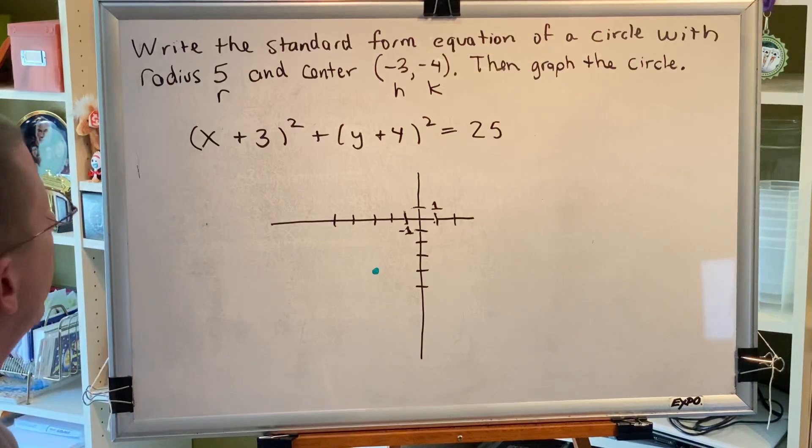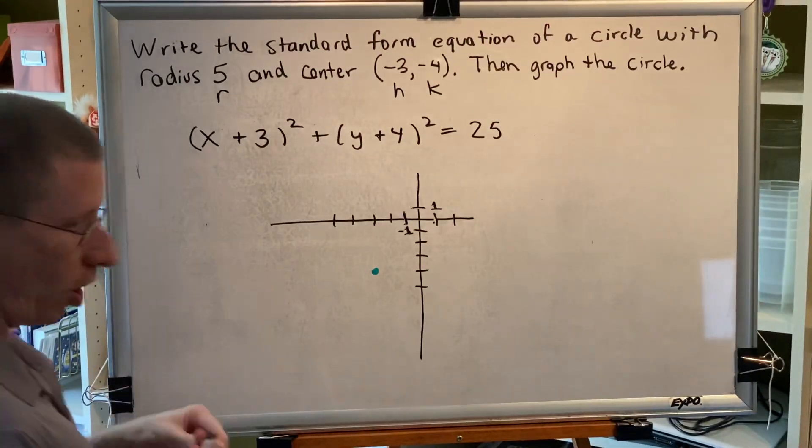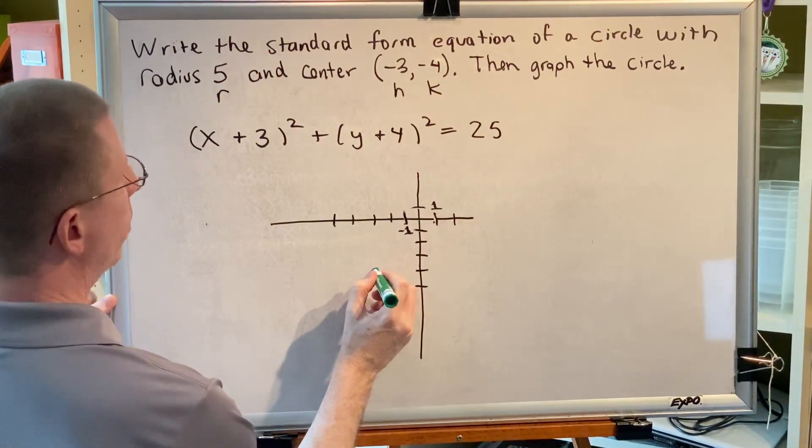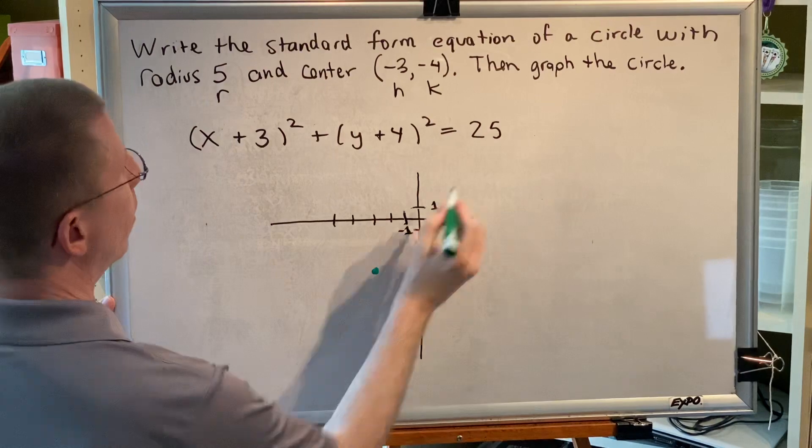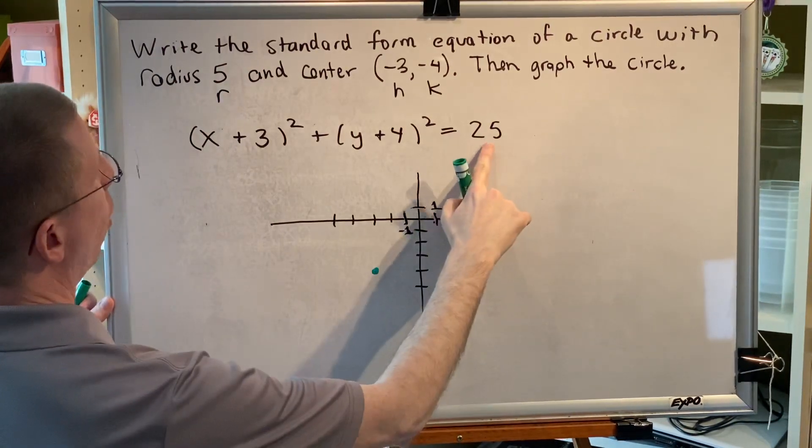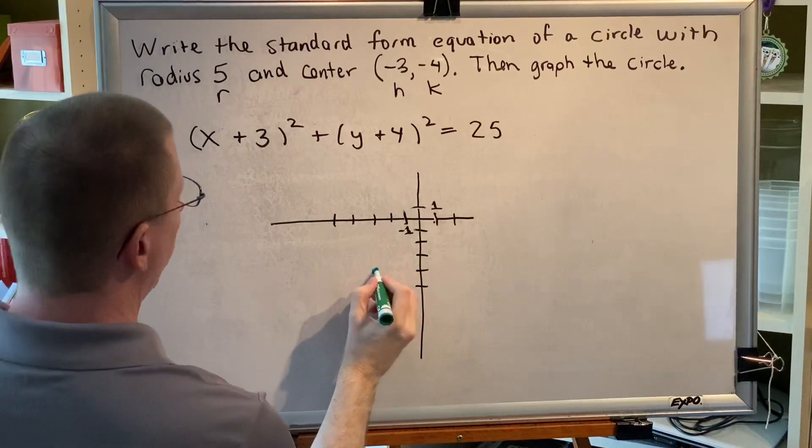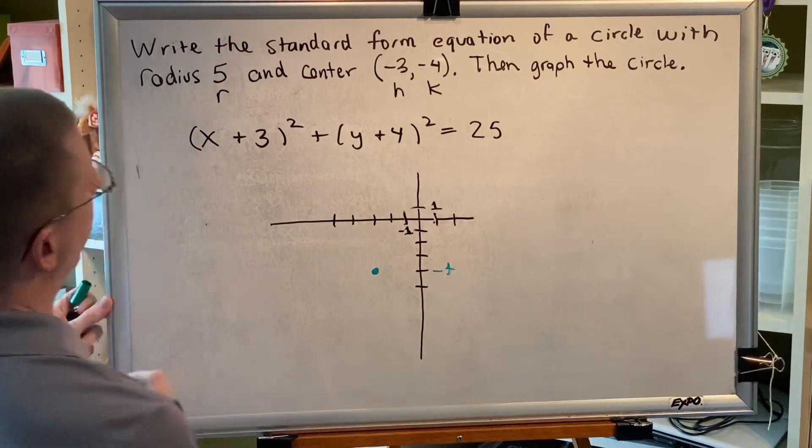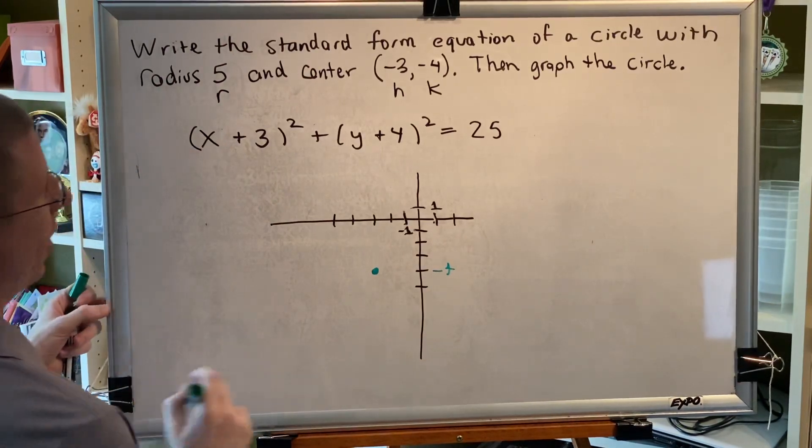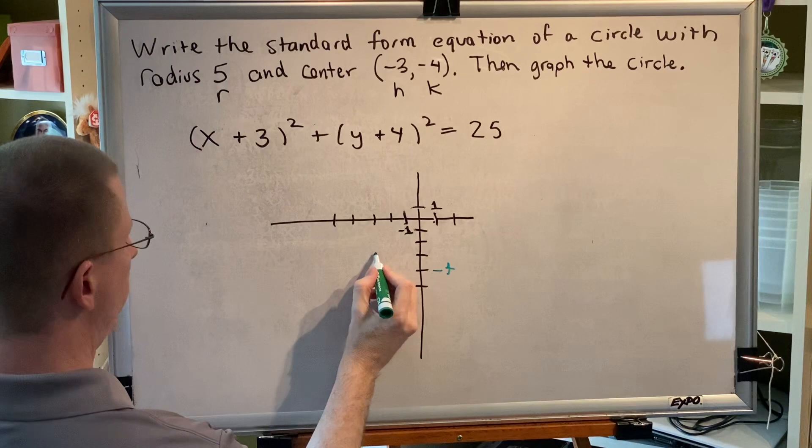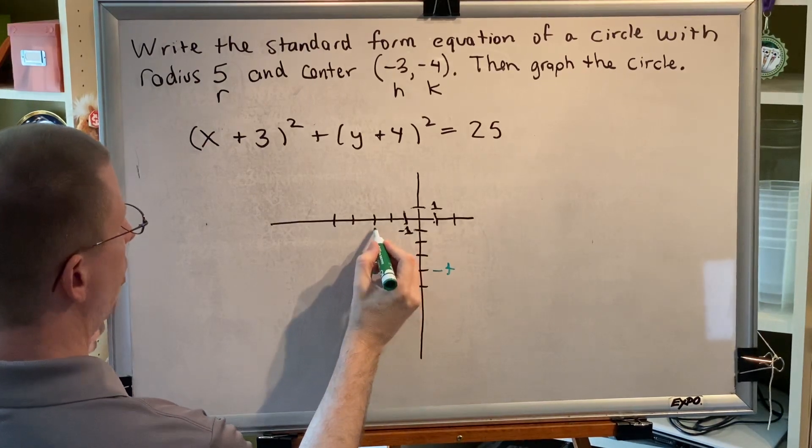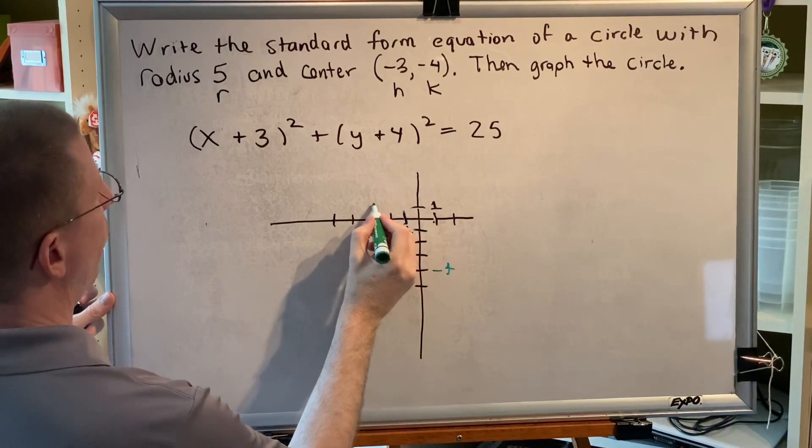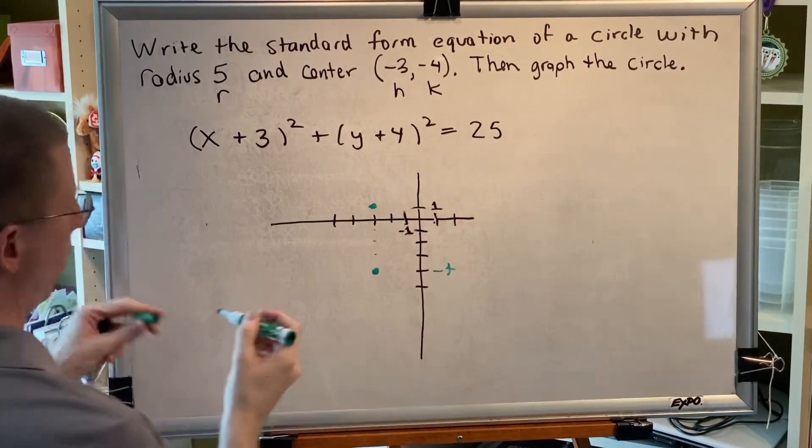The radius is five, which means that I need to start at my center and I need to go up, down, left, and right five steps. Remember, this is r squared. r is five. So let's go up first. Right now, I'm at a height of negative four. When I go up five, I should end up at one, but let's count it anyway. One step, two steps, three steps, four steps, which puts me directly on top of the x axis, five steps. And indeed, I end up at a height of one.